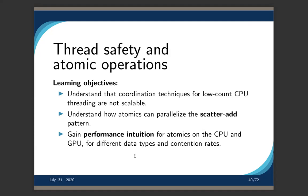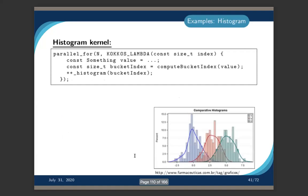Now we come to thread safety and atomic operations. We want to learn how to coordinate data access across threads. We'll talk about how strategies like locks that work on CPUs are not scalable and sometimes not even implementable on certain architectures. We'll cover how atomics can parallelize the scatter-add pattern, how Kokkos provides better solutions than raw atomics via scatter views, and give you performance intuition for how costly atomics are depending on contention rates and data types.